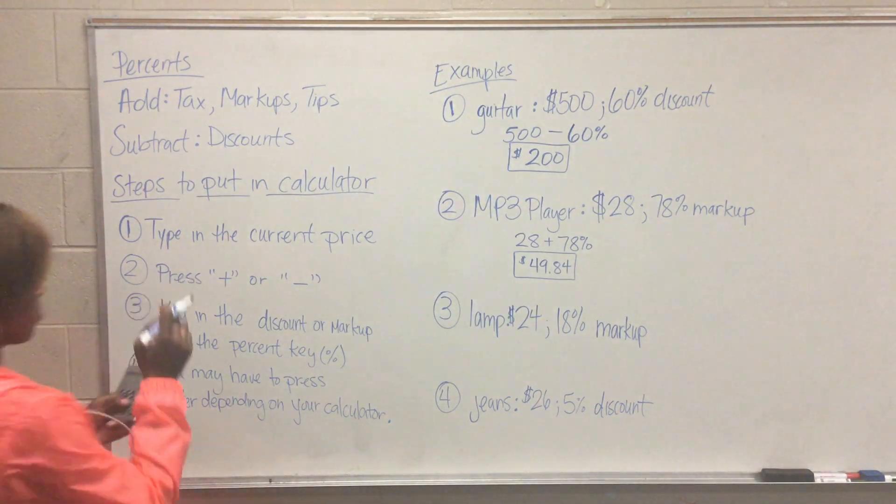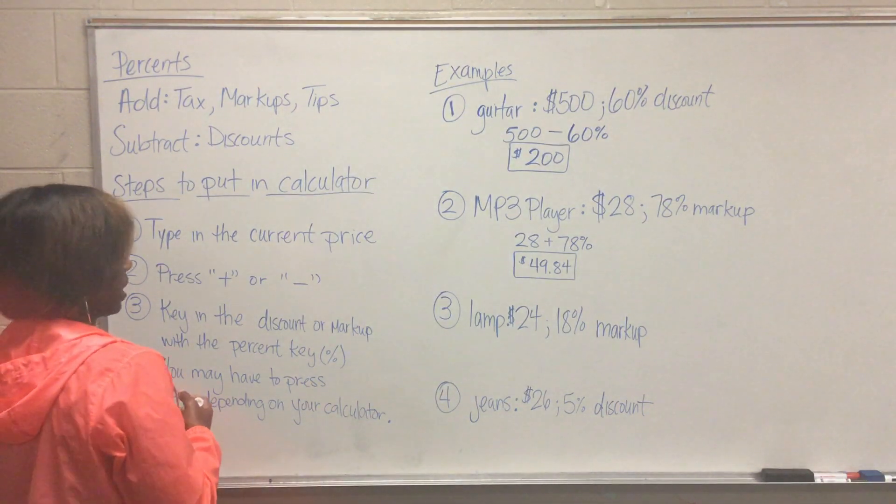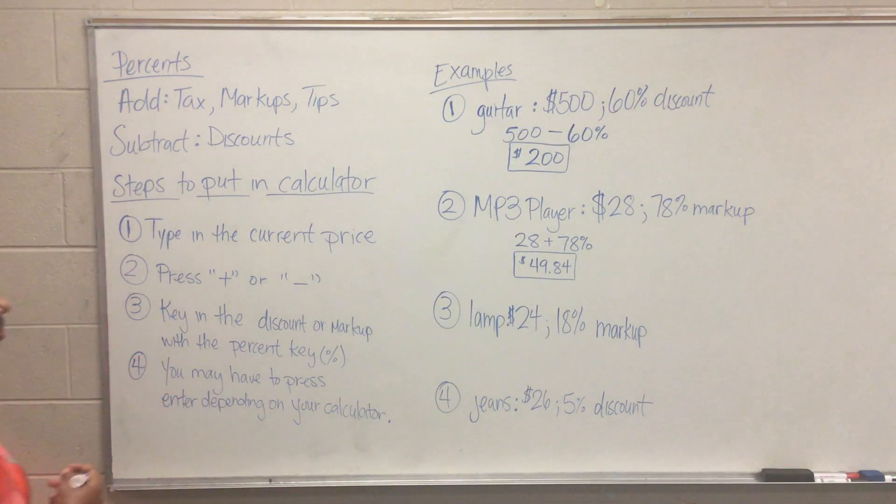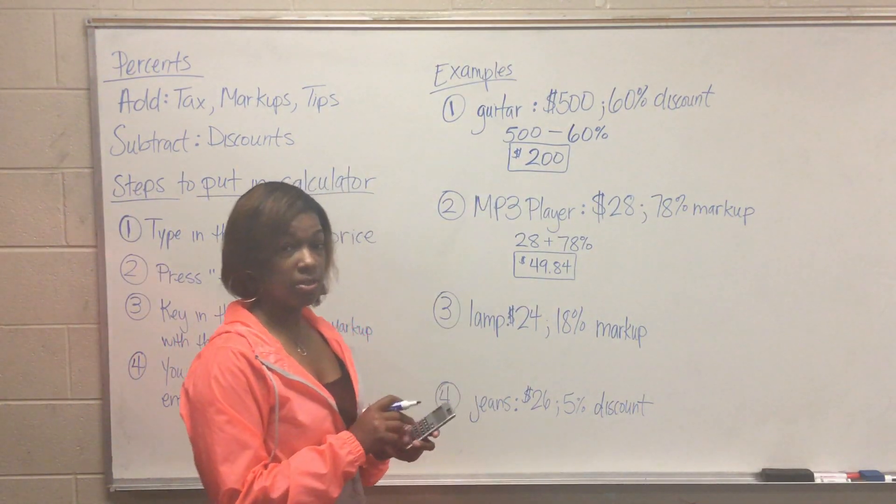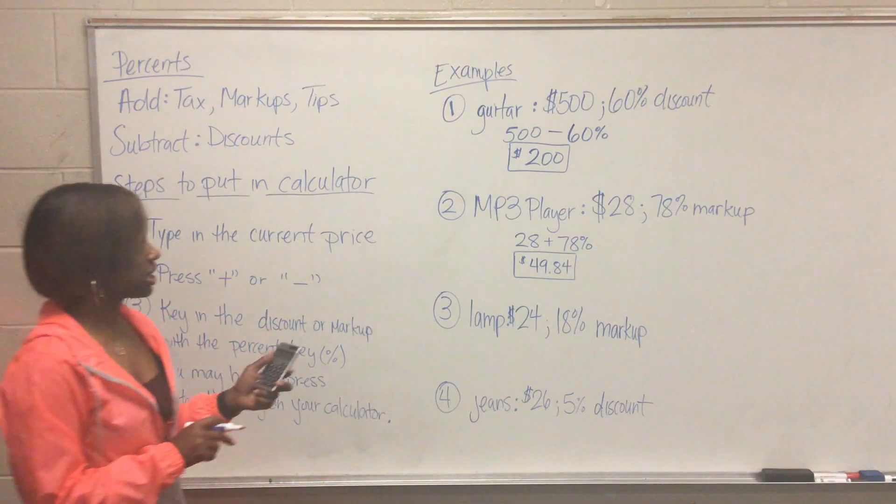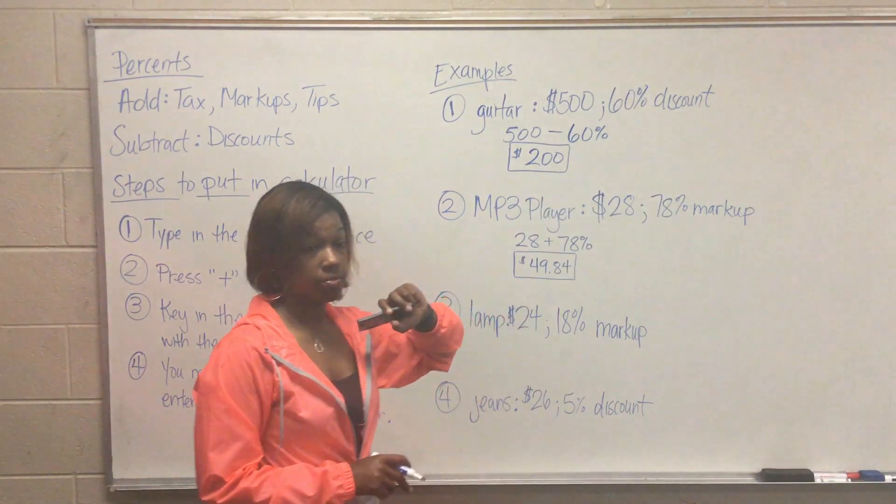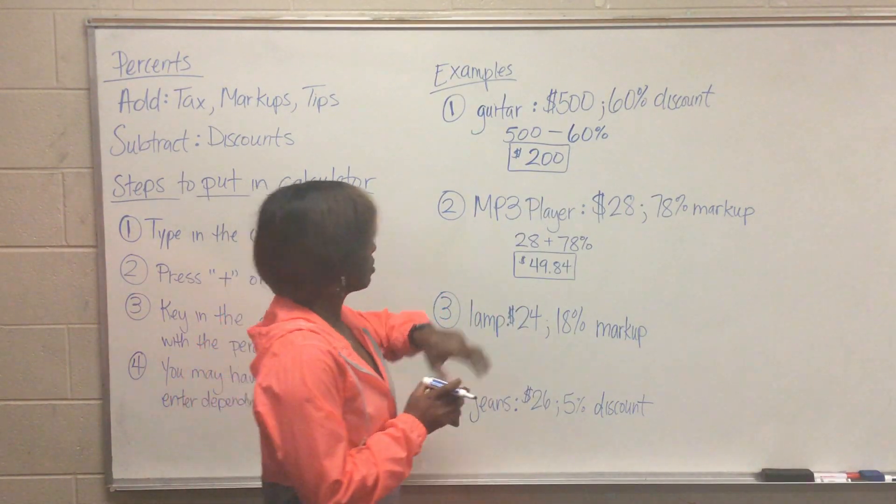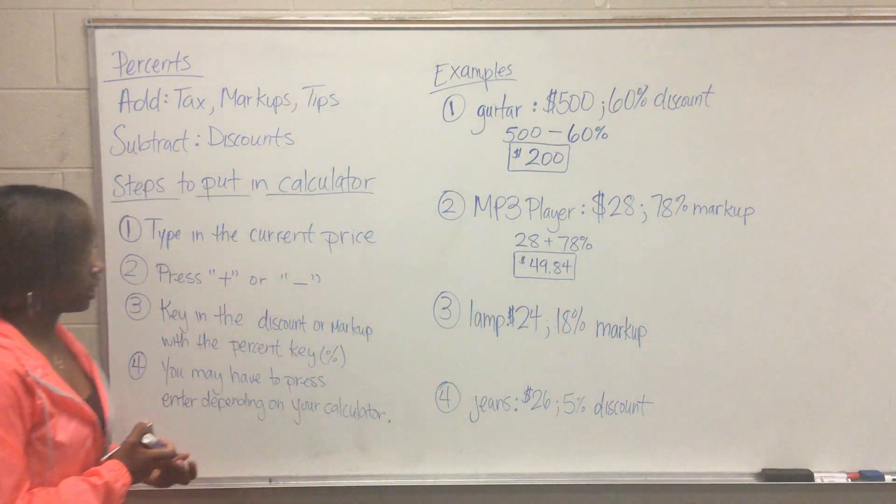Now for number one, if you got $300 as your answer you would have to press enter. If you got $300 as your answer for number one on your calculator, then you would have to go back in and press enter. Sometimes the calculators will give you the amount that they are taking off. So just note this: if you got $300 then you need to press enter.